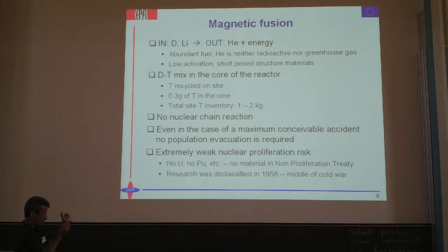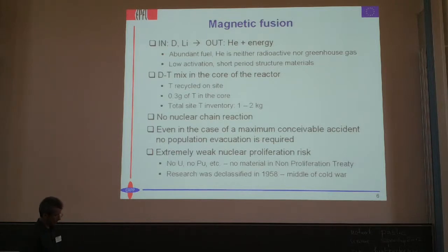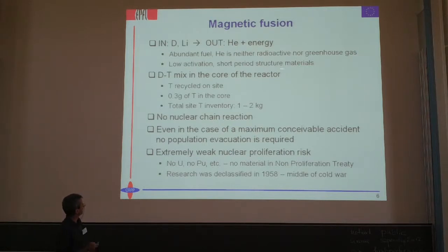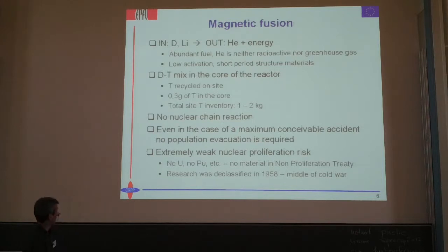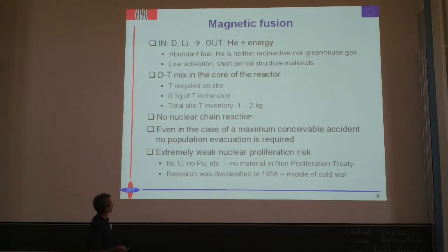The DT reaction produces a neutron, which then impacts a blanket, which produces by another nuclear reaction the tritium — tritium recycled. The machine ITER is approximately 1 million liters, and the weight of the fuel is 0.3 grams. So we have a reactor where the fuel content is 0.3 grams. The total tritium inventory is 1 to 2 kilograms. The neutrons are totally useless for a nuclear chain reaction. Even in the case of a maximum conceivable accident, there is no population evacuation required, in part because of these low numbers.